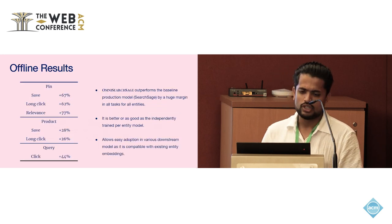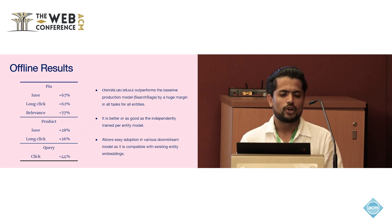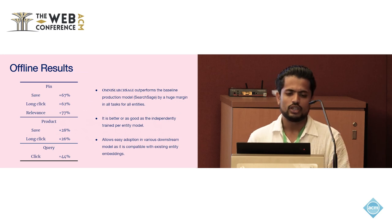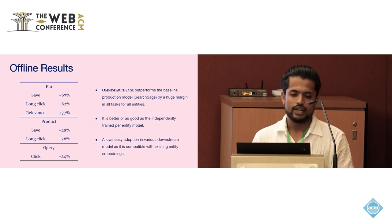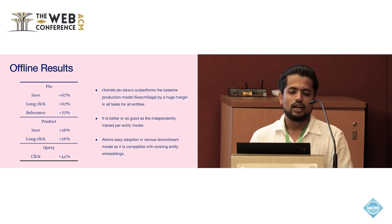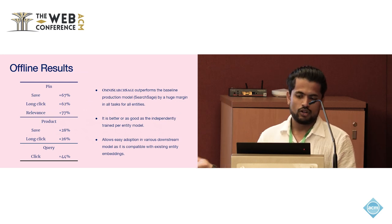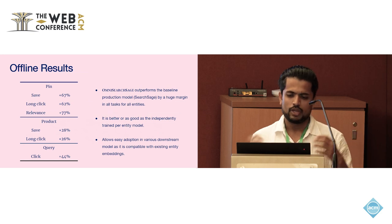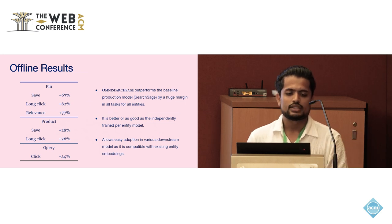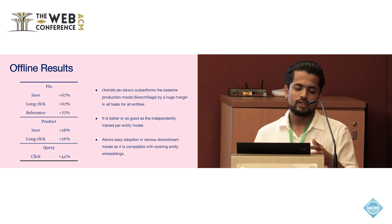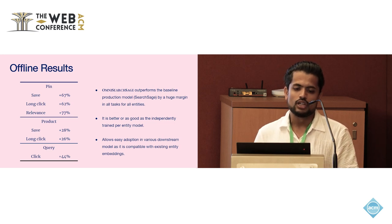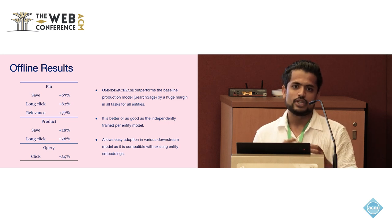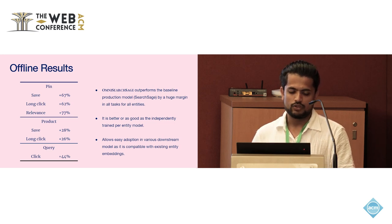This table shows results compared to a production baseline model. The unified model outperforms the baseline production models — which were separate for different entities — across all tasks and all entities. We also show in the paper that the unified model is either better than or as good as independently trained models for each task and entity, which demonstrates the power of unification.